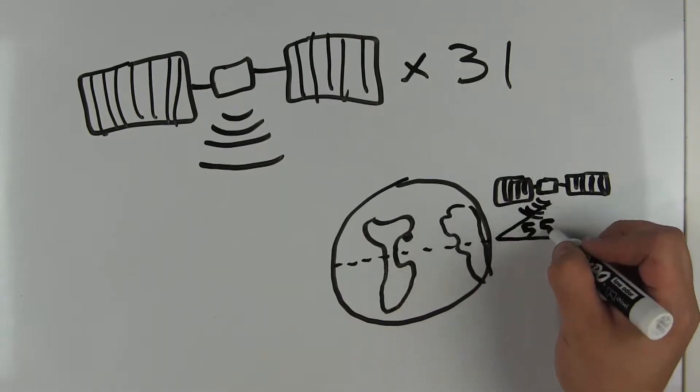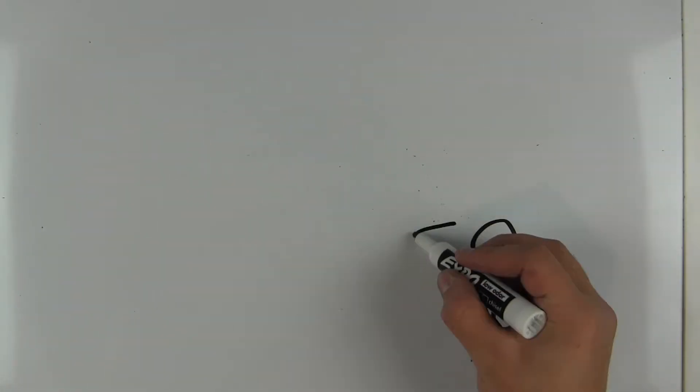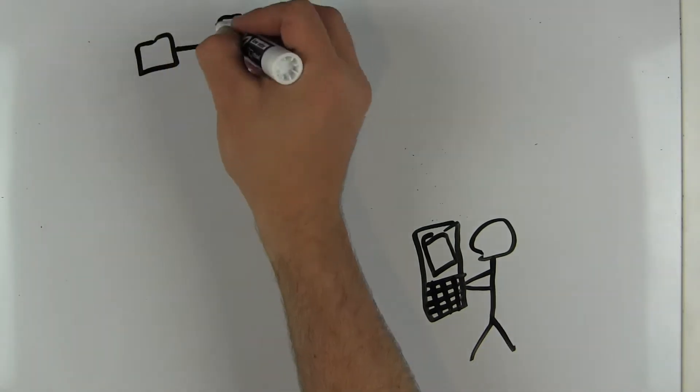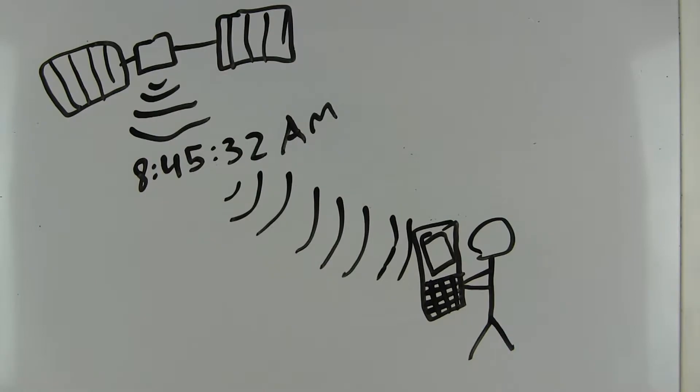The system is designed so that at any time there are six satellites in view of a single GPS unit. The GPS receiver gets a signal from each GPS satellite with a time code that has the exact time the signal was sent from the satellite.